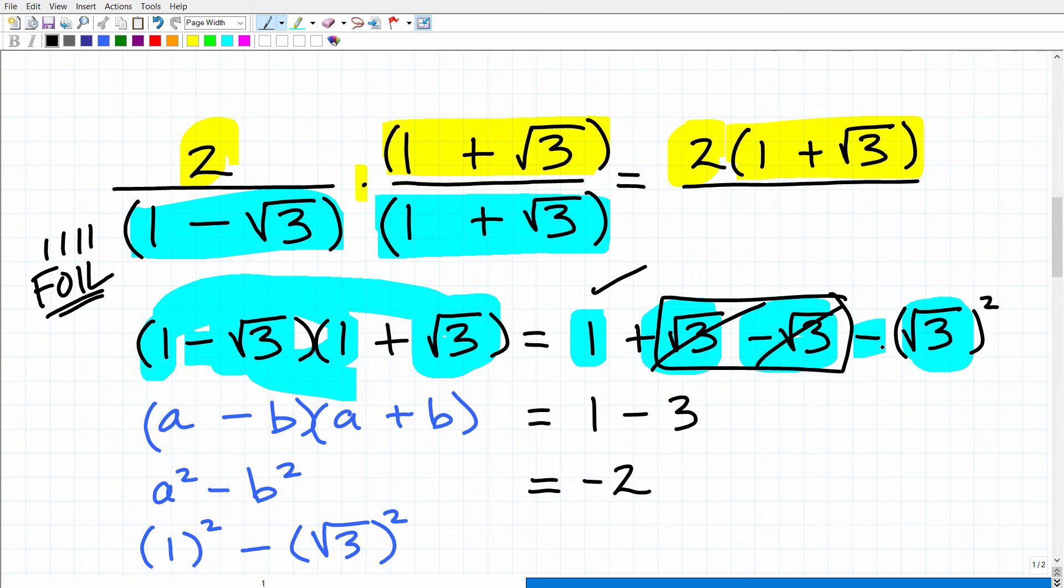So now let's go ahead and simplify this. You can see that this positive square root of 3 and minus square root of 3 are going to cross-cancel one another. So we're left with 1 minus the square root of 3 squared. What's the square root of 3 squared? Well, that is simply 3. So we have 1 minus 3. Of course, that's going to be equal to negative 2.